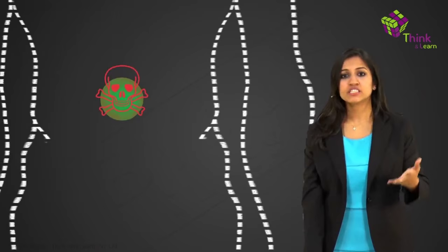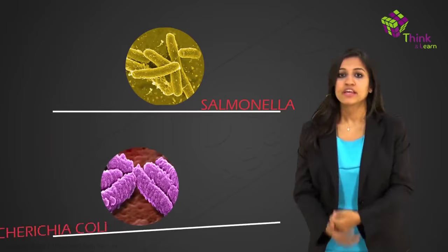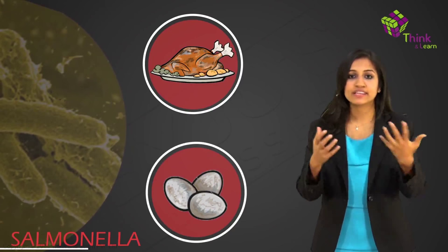And there are two very well-known causes of food poisoning: Salmonella and Escherichia coli, called E. coli. Now Salmonella is usually found in chickens and eggs that have been contaminated, and anything that has been made using these contaminated chicken or eggs.